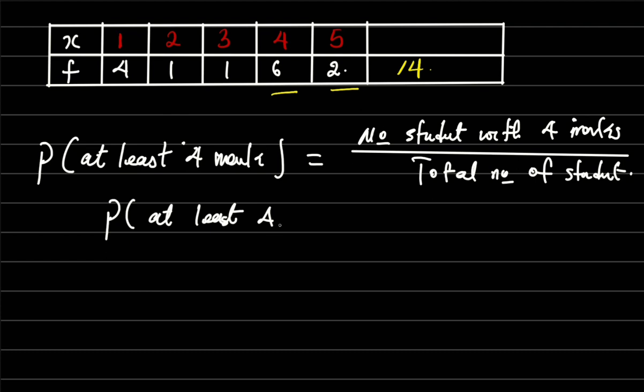So the probability now of at least 4 marks will be equals to 6 plus 2 which is 8, all over the total which is 14. Now taking it to the lowest term, I'm gonna have 4 over 7. So the answer is 4 over 7.